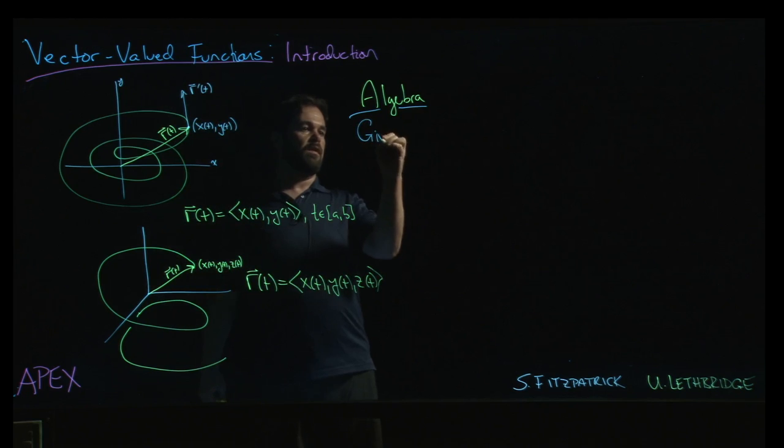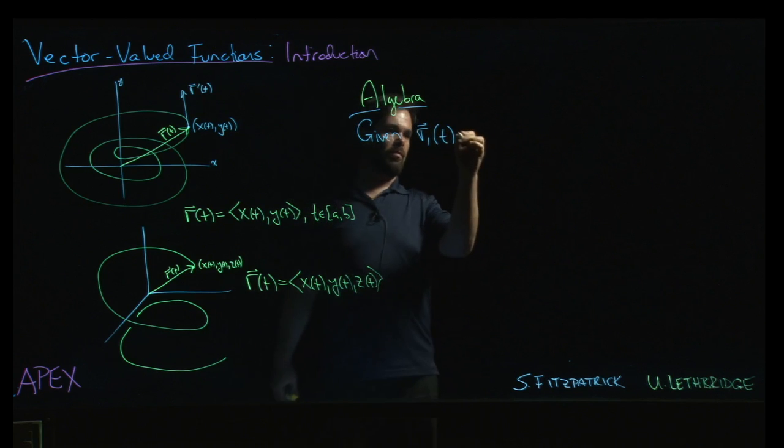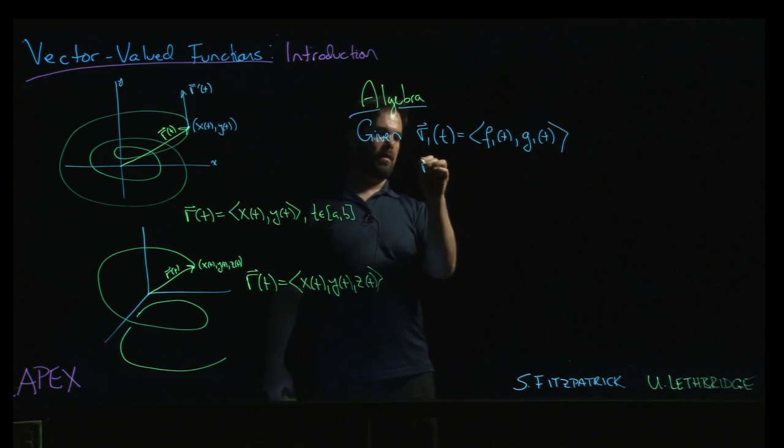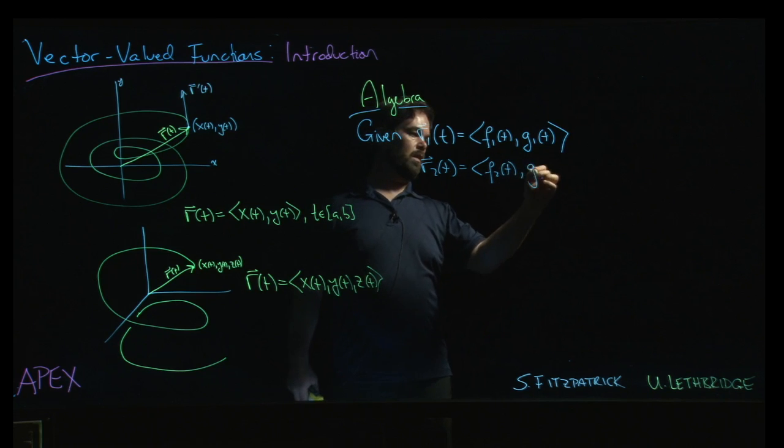So if I have a pair of vector-valued functions, let's just draw, let's do two-dimensional just to save some writing. So let's say I have f1 of t, g1 of t, and r2 equal to f2 and g2.